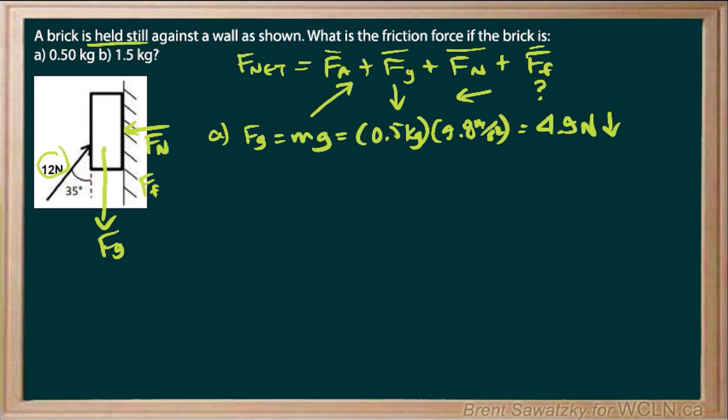So if we were to start sketching out our vector addition diagram, we could say there's our 12 newtons. And then our F_G is going to be there. Now, does the F_G go to the very bottom of that 12 newton? In other words, does it pass this point? Or is it less than that? Is it greater than that? That tells us something about friction.